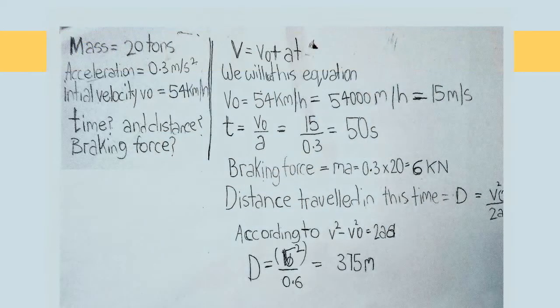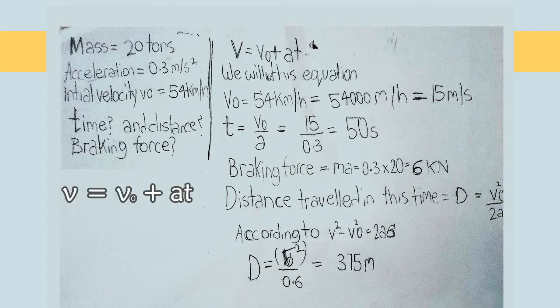To solve the problem, we will use the equation: final velocity V equals initial velocity V0 plus acceleration A times time taken. According to the problem, V0 equals 54 kilometers per hour equals 54,000 meters per hour which is equal to 15 meters per second.